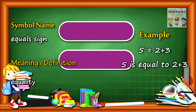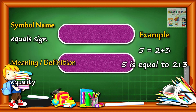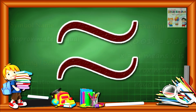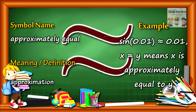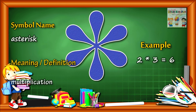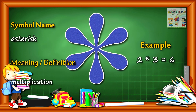Equal sign: equality. Approximately equal: approximations. Asterisk: multiplication.